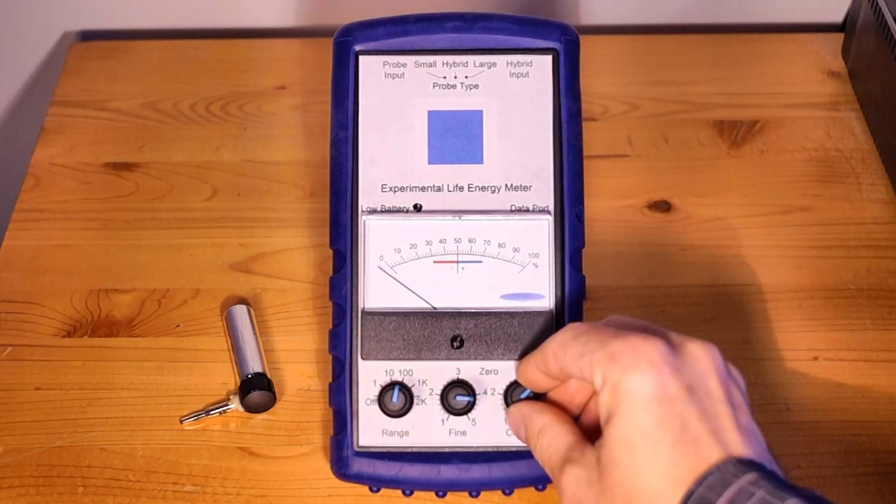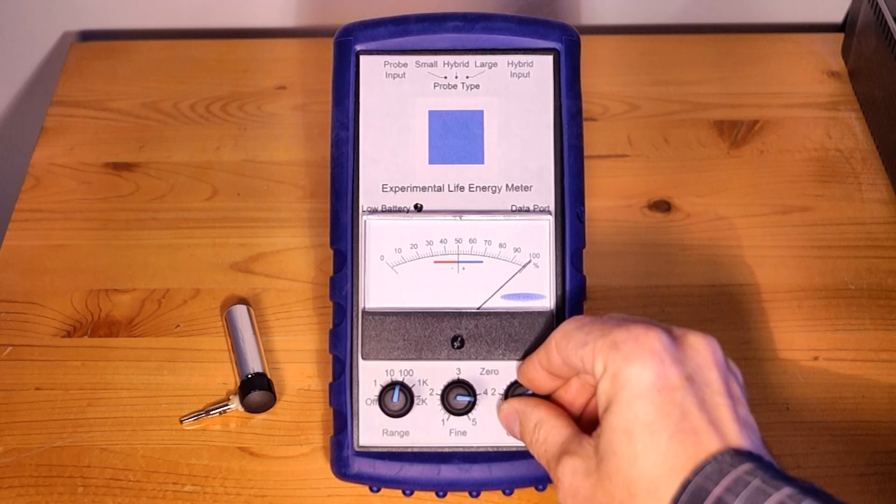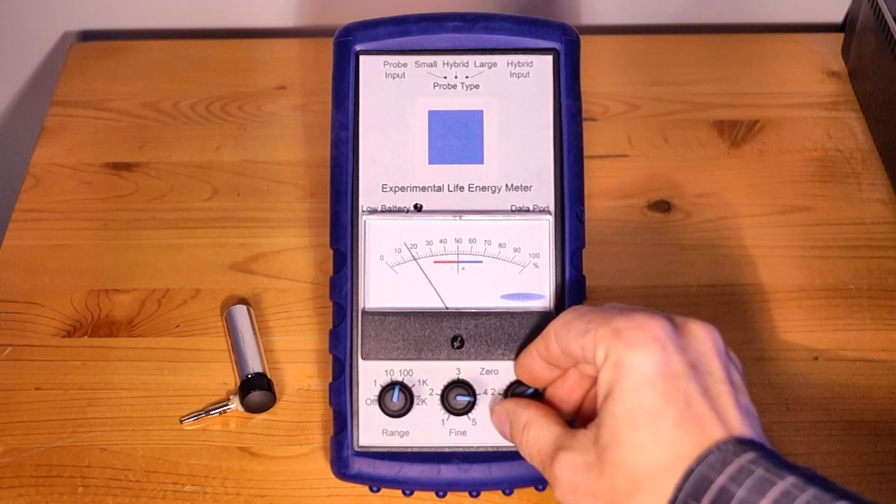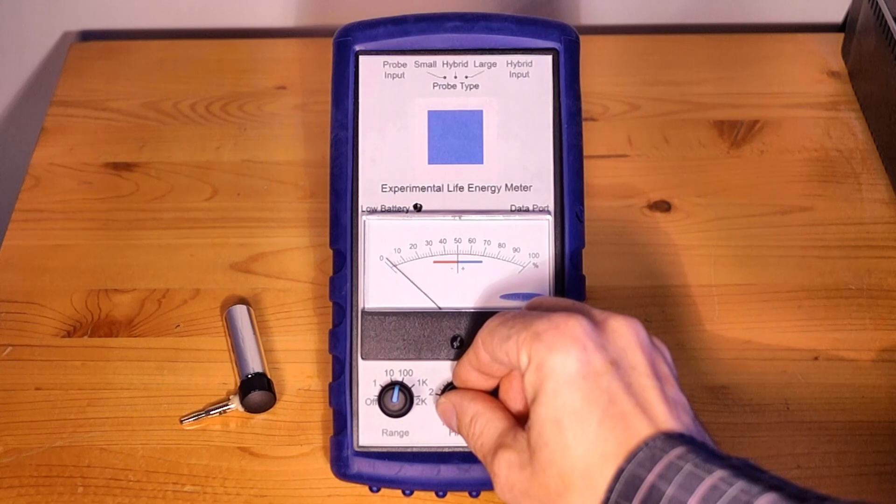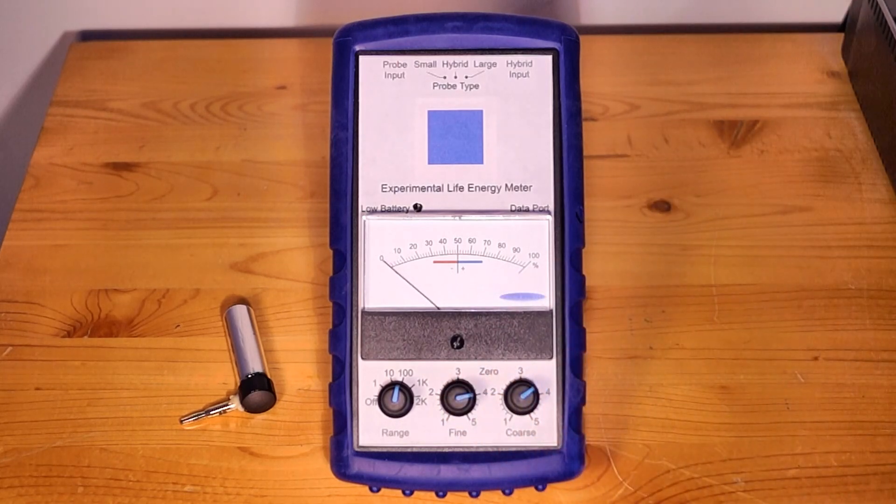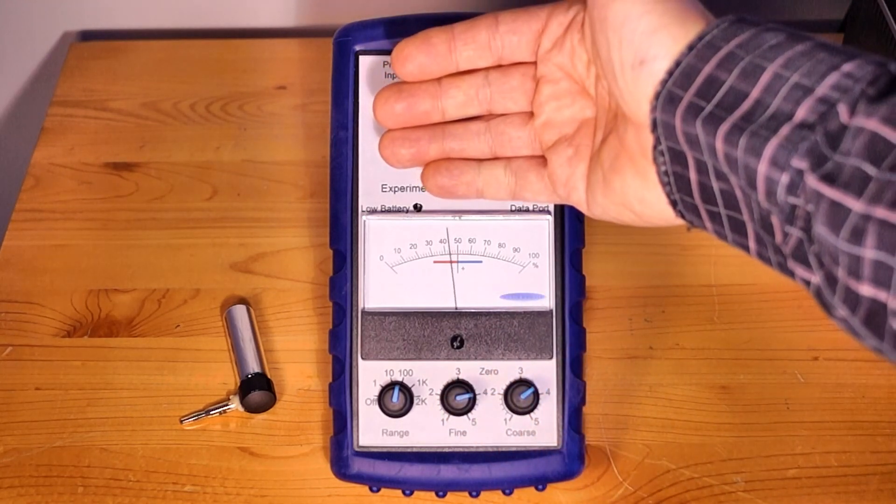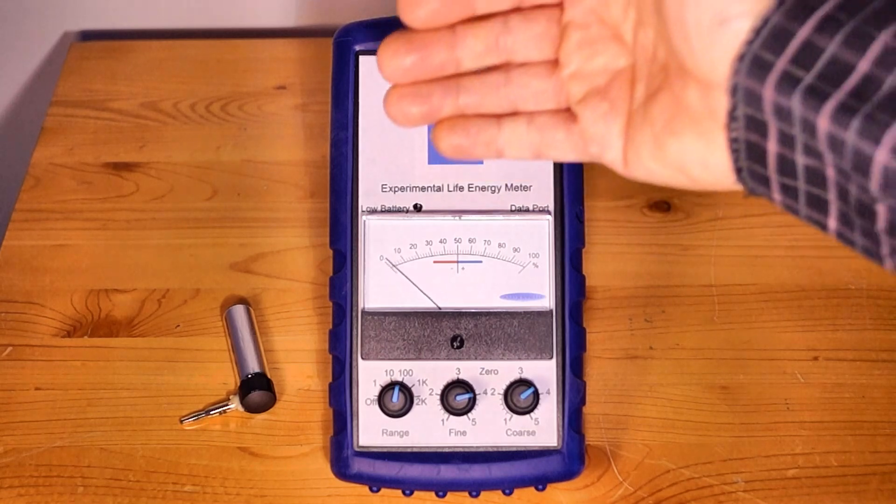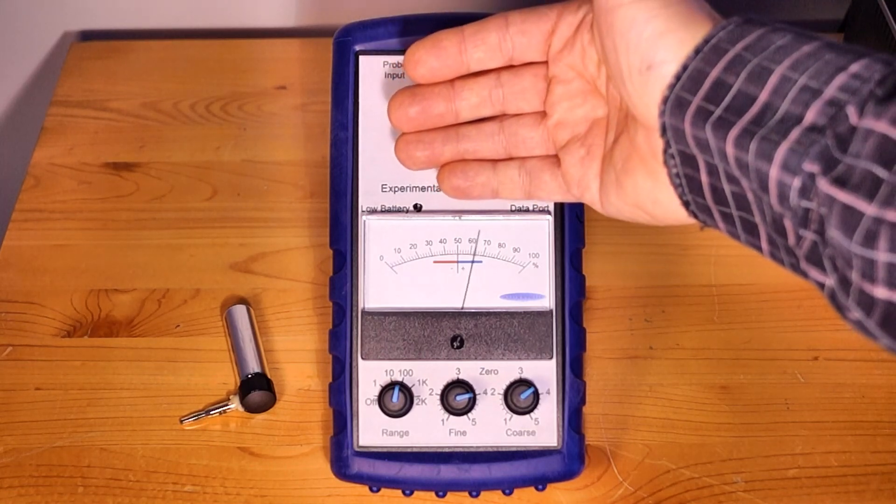If we now increase to the times ten range, again we adjust the zero for the optimal setting. We can now use the coarse and fine adjustments. Now you can see that the field of the body is detected at a much larger distance.